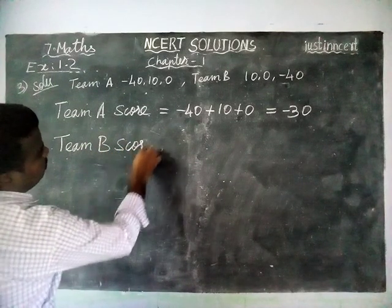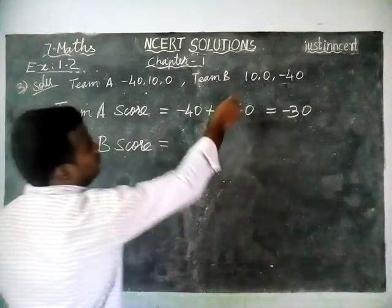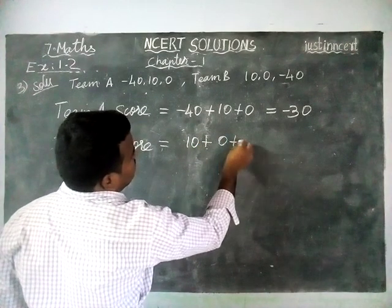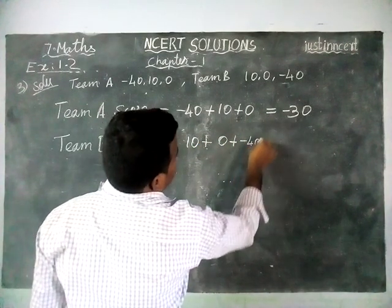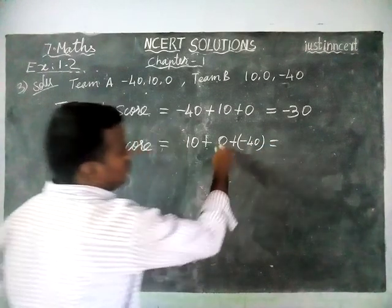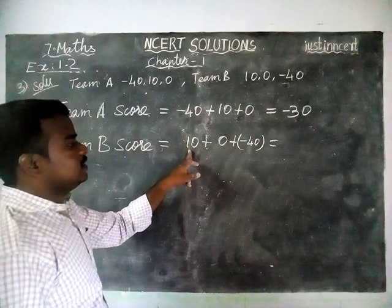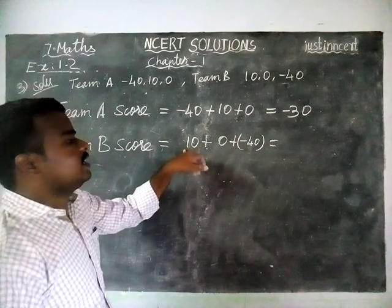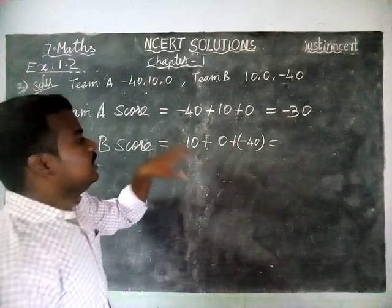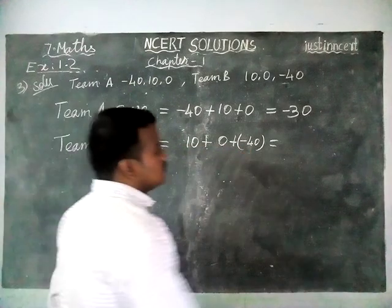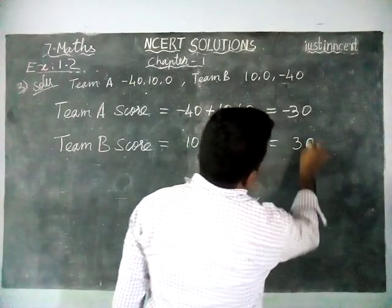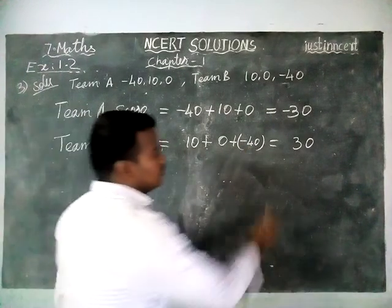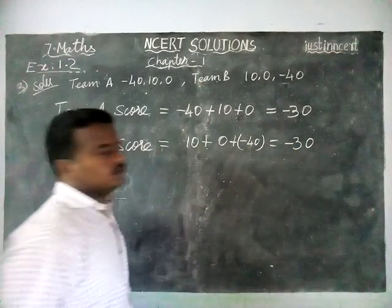Now team B's score is equal to: first round 10 marks, plus second round 0 marks, plus third round minus 40. Here also, 0 is not a problem. This is a plus sign and this is a minus sign — when adding two different signs we have to find the difference. The difference between 10 and 40 is equal to 30.